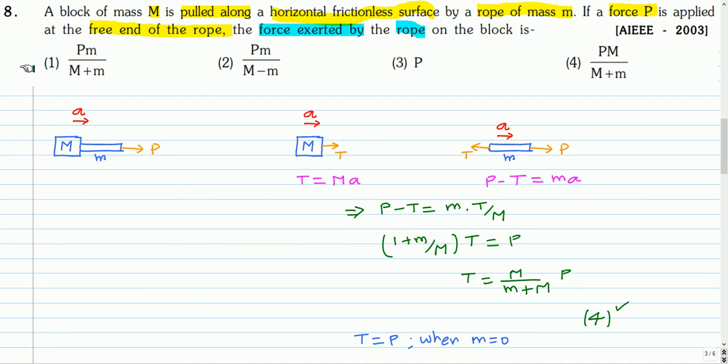This is the next question. A block of mass M is pulled along a horizontal frictionless surface by a rope of mass m. If a force P is applied at the free end of the rope, the force exerted by the rope on the block is.